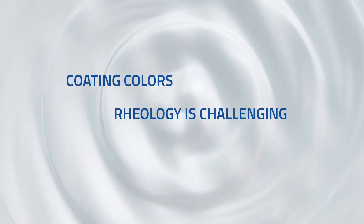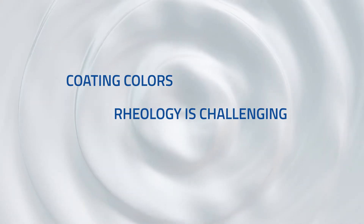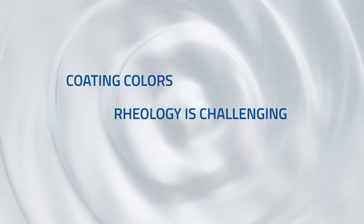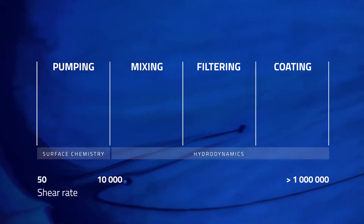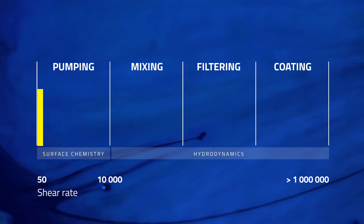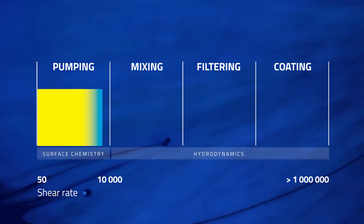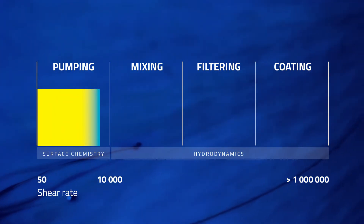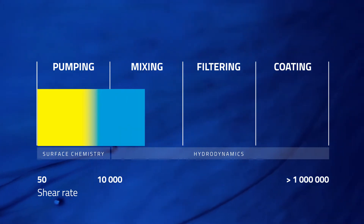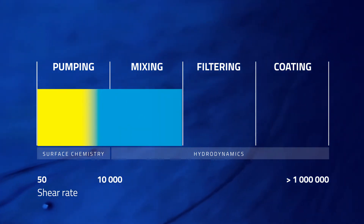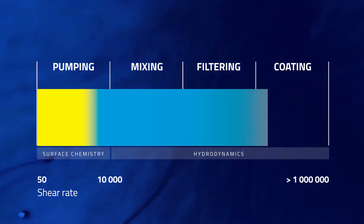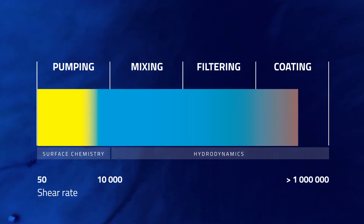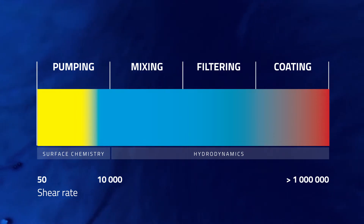Coating colors are very complex viscoelastic materials and their rheology is challenging. The coating process starts with pumping of raw materials to the mixing station before application filtering takes place. The problem is that each process step is stressing the coating colors with different magnitude. Low to moderate shear rates are influenced by surface chemistry, but at high and ultra-high shear rates, the surface chemistry does not count anymore and hydrodynamic forces determine the rheology.